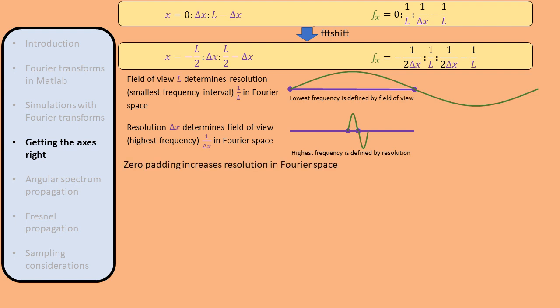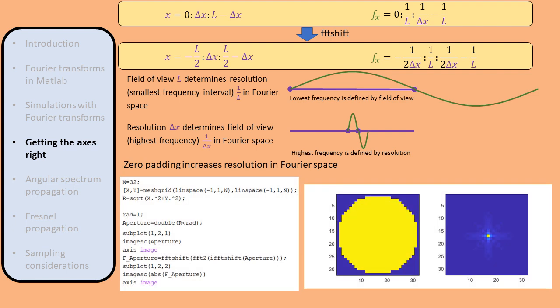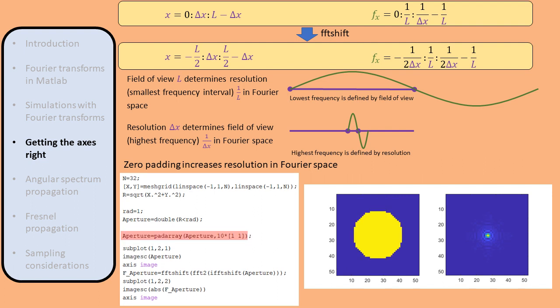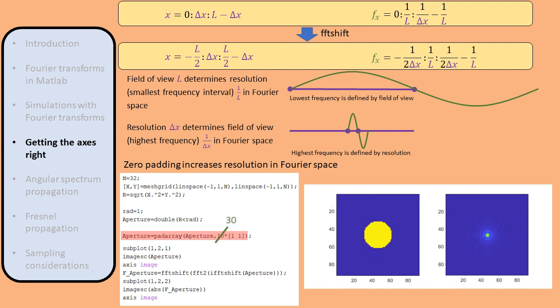Zero-padding can be demonstrated with a simple MATLAB code. We start with an aperture that fills the entire field of view, so when we Fourier transform it we obtain a low-resolution Airy disk. When we zero-pad the aperture, the resolution of the Airy disk increases. The more zeros we add, the higher the resolution of the Airy disk.